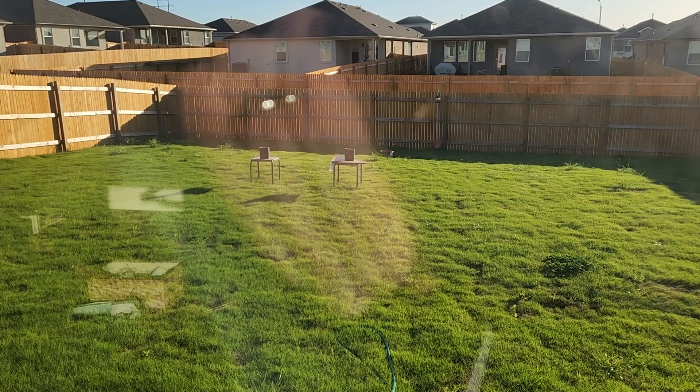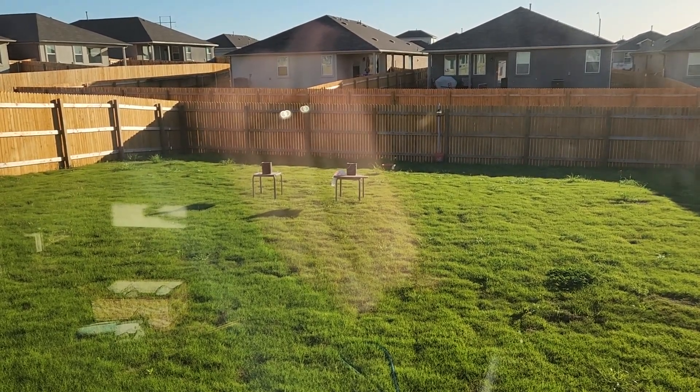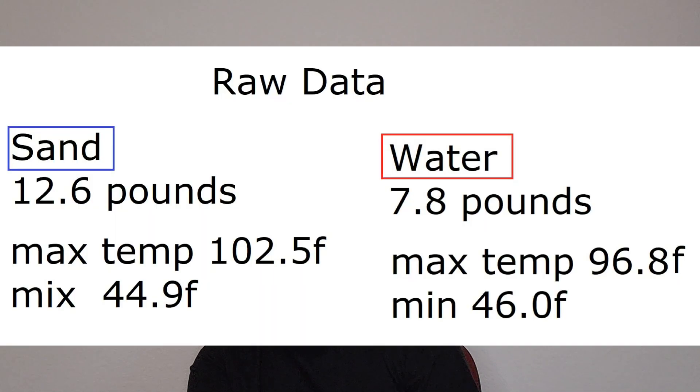I've got a graph that shows the heat climbing on both of them, peaking and then cresting back down. There were two different pieces of data we were expecting: the highest temperature recorded, and how long that heat was retained once the sun had gone down. The maximum temperature achieved in the sand was 102.5°F. The maximum temperature achieved by the water was 96.8°F. So all things being exactly perfectly equal, the sand got hotter.